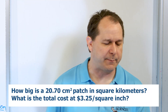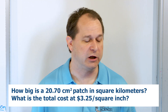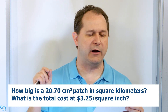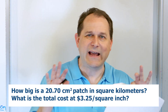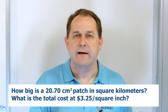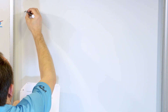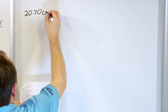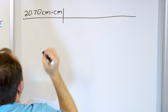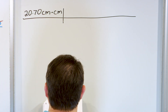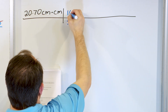The last problem: an airplane requires a 20.70 square centimeter patch. How large is this patch in square kilometers, and how much will it cost if the material costs $3.25 per square inch? Converting area — square inches, square feet, square kilometers — is the same idea as converting volume. We start with 20.70 centimeters times centimeters, because square centimeters is centimeters times centimeters.